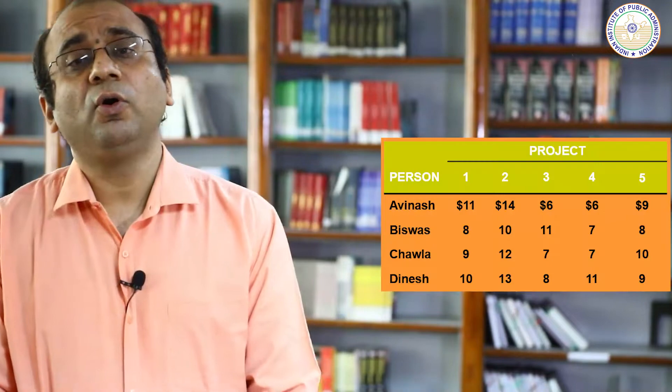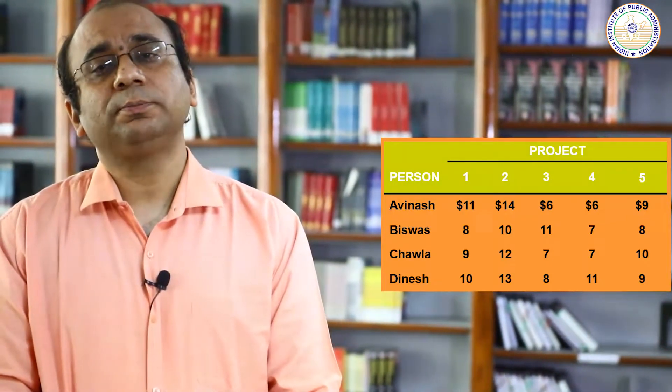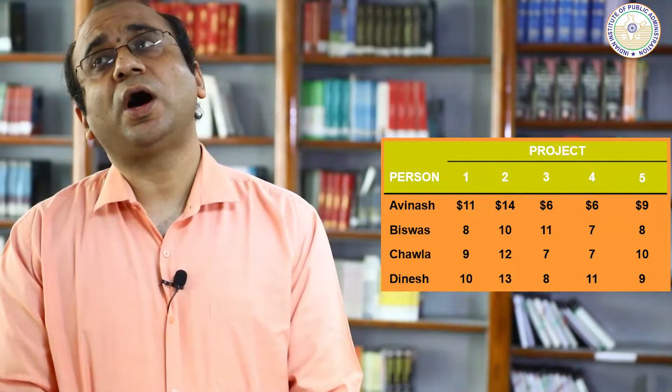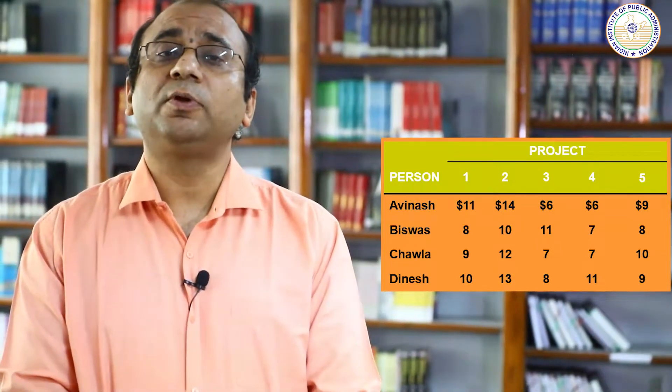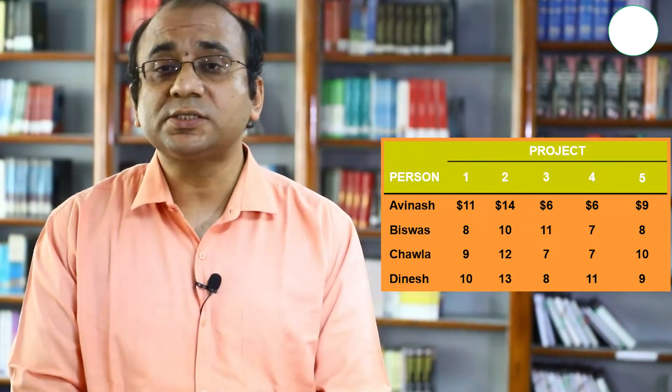In the unbalanced assignment problem, suppose you have only four persons but five jobs — can we still solve this with the assignment model? Yes, we can. Similarly, the vice versa case: five jobs and four persons, or four jobs and five persons. We want to decide which person is not given a job, and we use the assignment model for this.